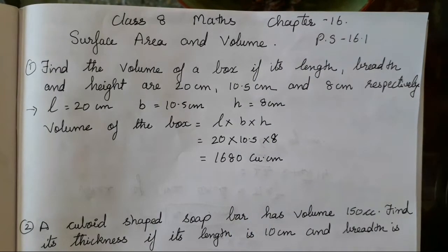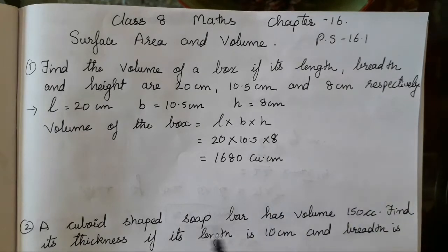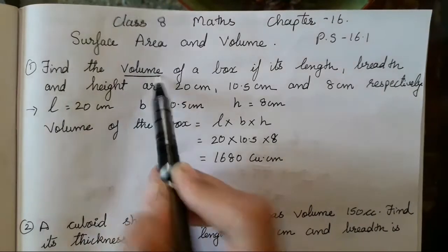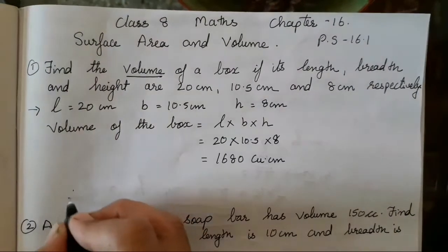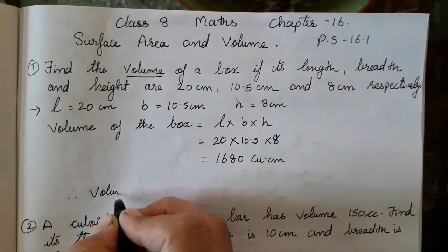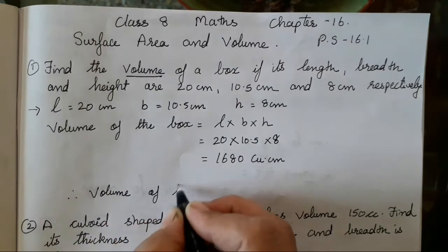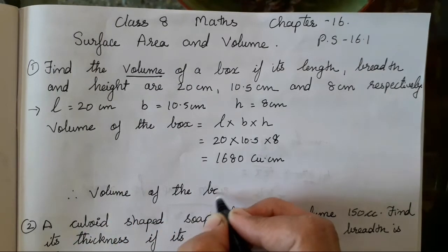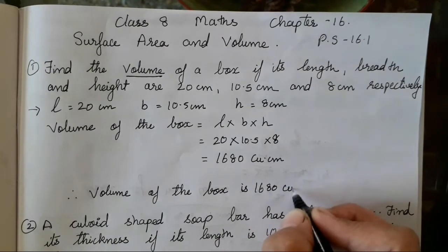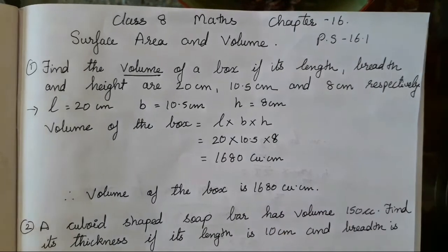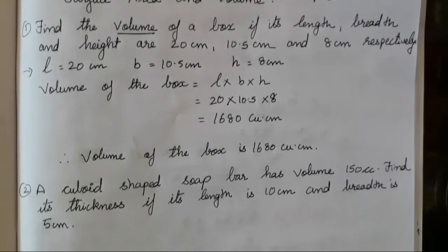Now children, you all have to remember one thing. While finding the area we write square cm, but while finding the volume you have to write cubic cm. Therefore, volume of the box is 1680 cubic cm. Got it children? It's very easy.